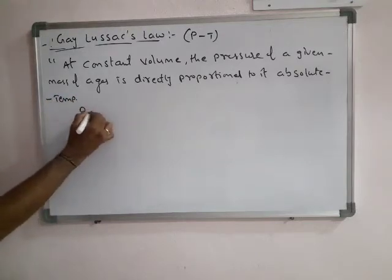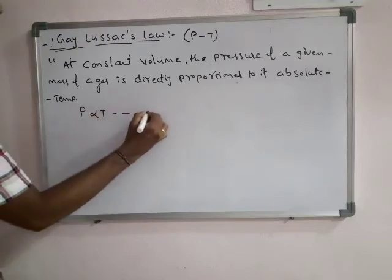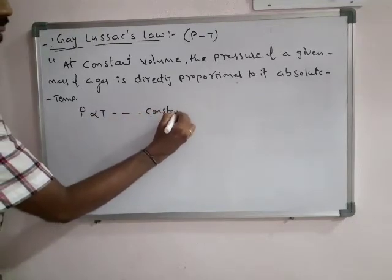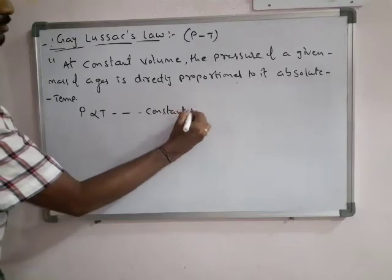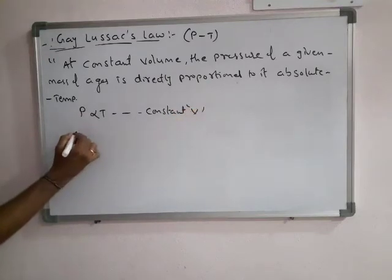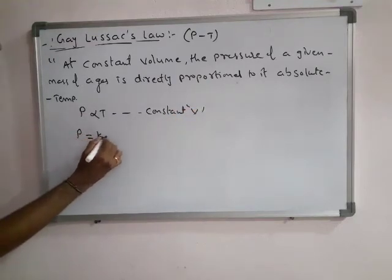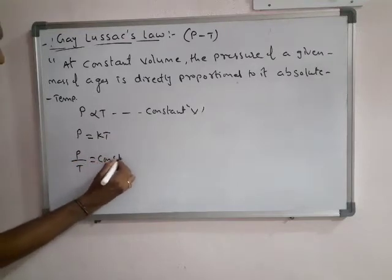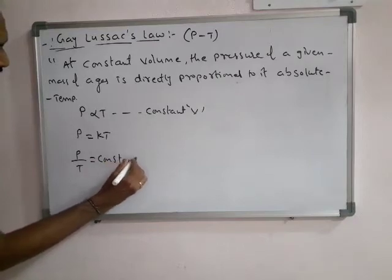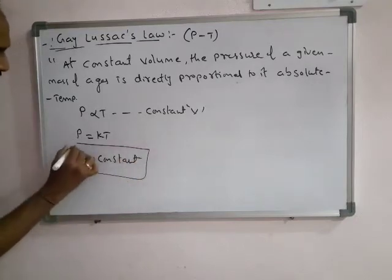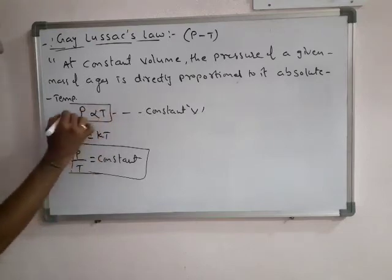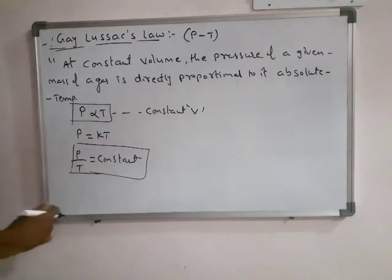Simply, we can write P proportional to T, that is at a constant value. So the derivation gives P equal to KT, which means P by T is equal to constant. This is Gay-Lussac's law.